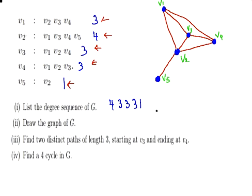So what we're going to draw now is to find two distinct paths of length three, starting at v3 and ending at v4. This is the main part of the presentation. So let's look at that now.